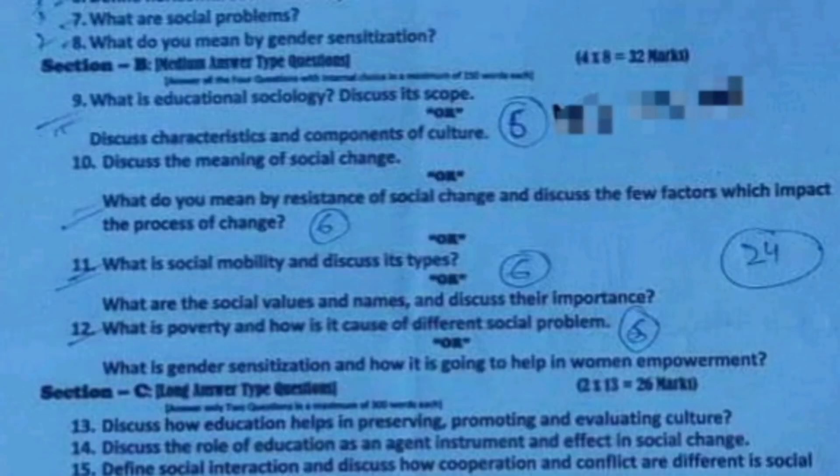Section B: medium answer type questions. 4 into 8 is equal to 32 marks. Question number 9: what is Educational Sociology? Discuss its scope, or discuss the characteristics and components of culture.